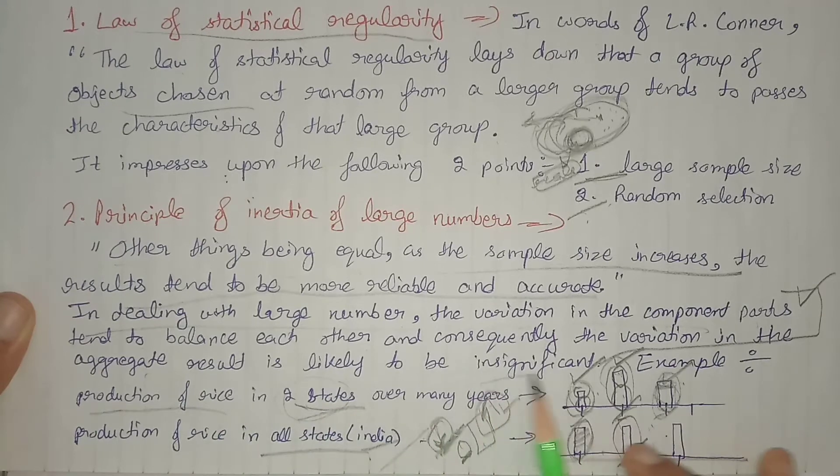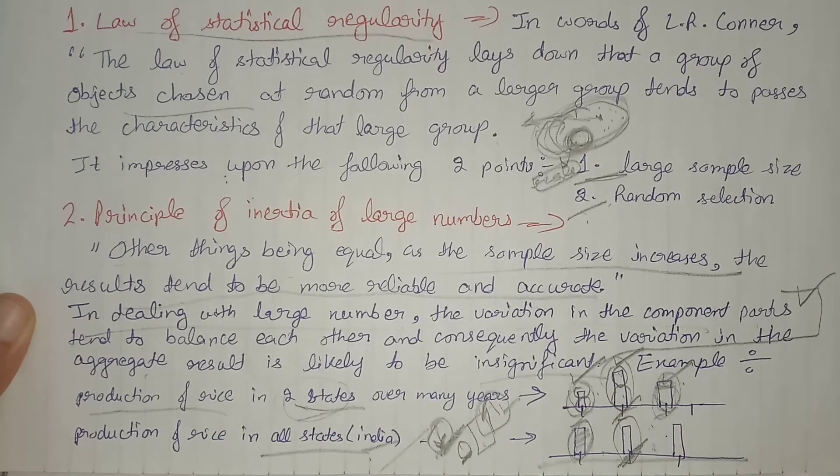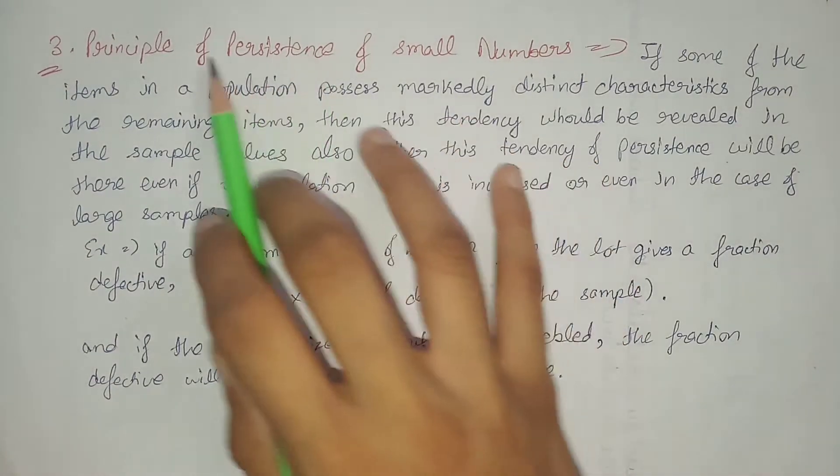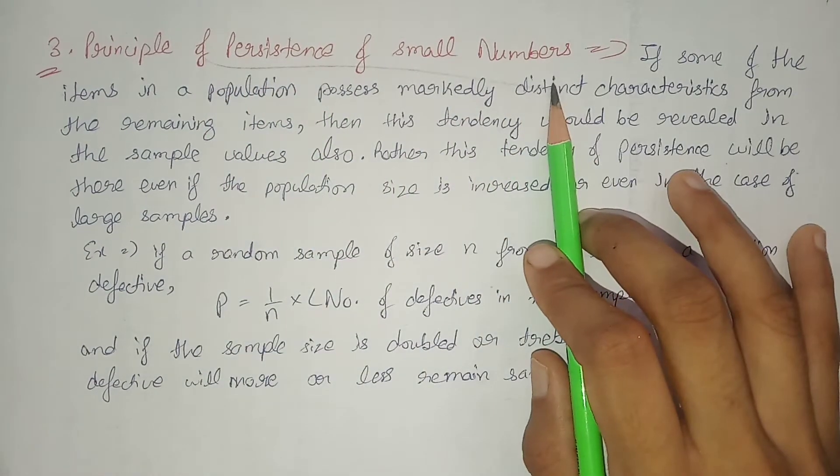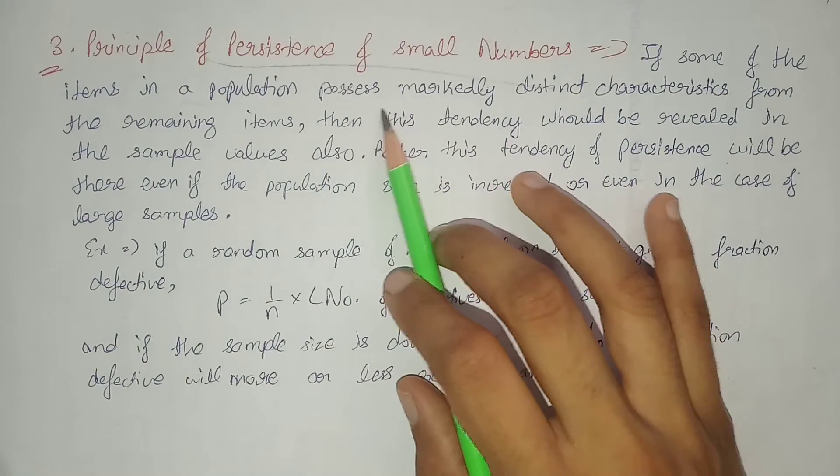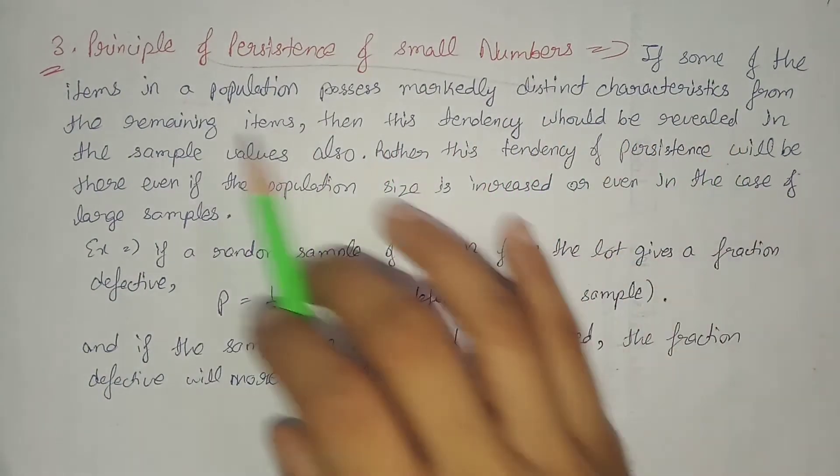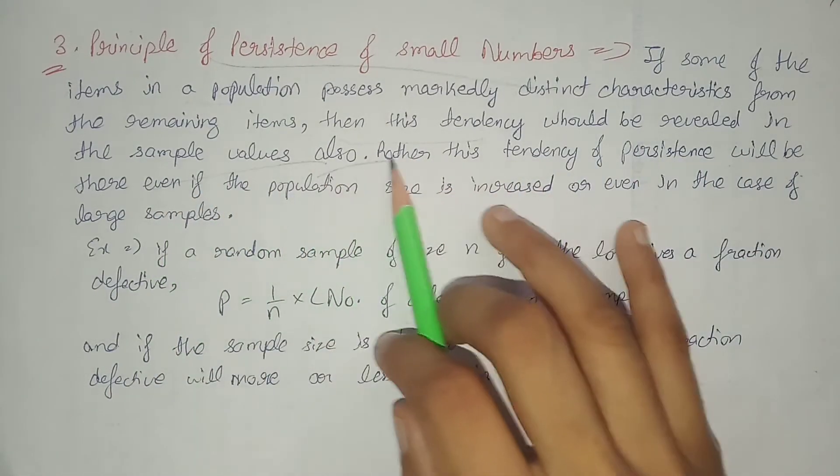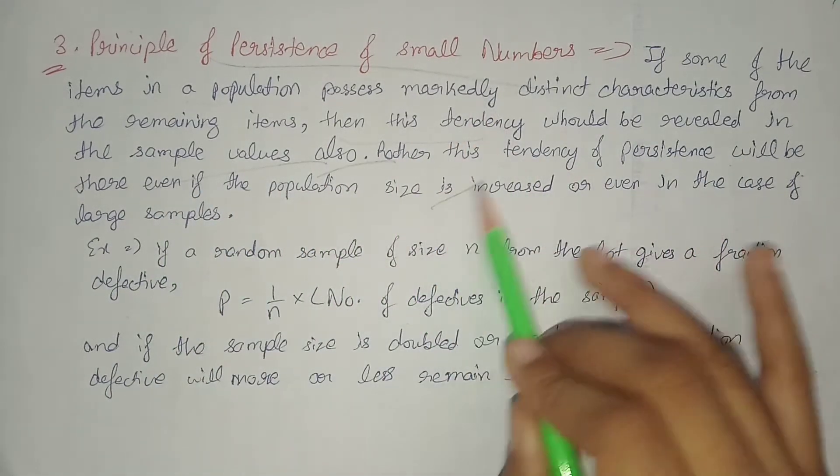Next, the third law is the principle of persistence of small numbers. If some of the items in a population possess markedly distinct characteristics from the remaining items, then this tendency would be revealed in the sample values also.